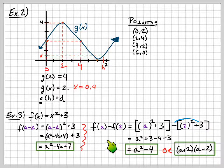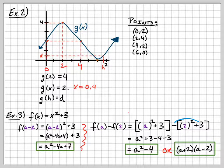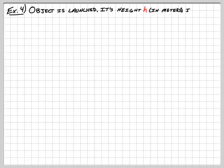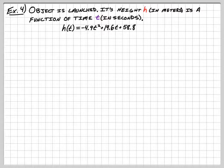The big thing to note is that f of (a minus 2) gives a very different result than f of a minus f of 2. We've seen similar notation for y values in slope calculations. Now for our last example, Example 4, a word problem: an object is launched. Its height h is in meters and is a function of time t in seconds. The equation is h of t equals negative 4.9t squared plus 19.6t plus 58.8.